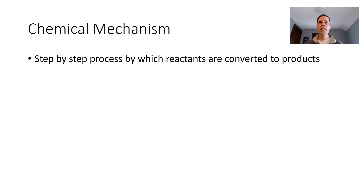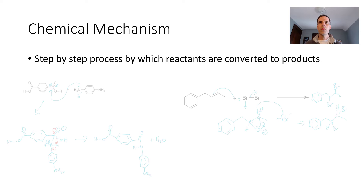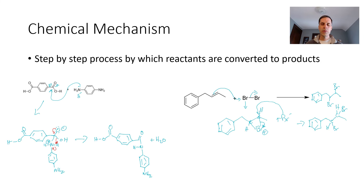As we talk about chemical mechanisms, we've touched on this before. Last semester when we talked about some organic chemistry, we said a mechanism is the step-by-step process by which reactants are converted to products. We saw examples: substitution at a carbonyl has a couple of steps, and addition of an alkene to bromine also has a couple of steps. It doesn't just magically happen — there's a process.